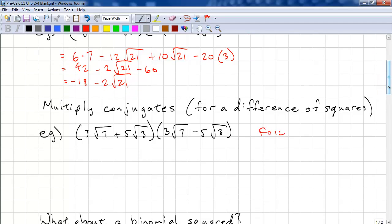Okay, multiplying conjugates. And what we will get is a difference of squares. And we multiply conjugates, because it's the only way to remove radicals.